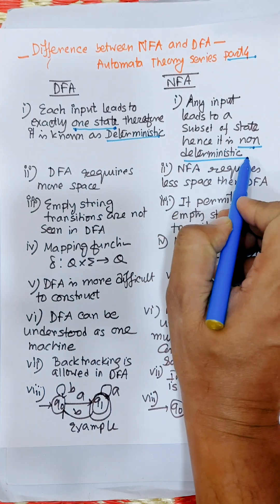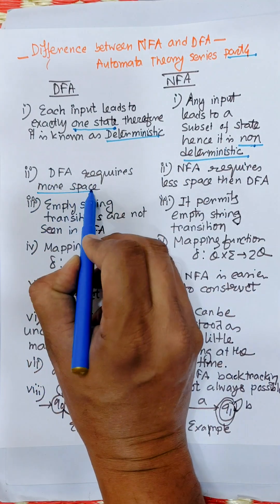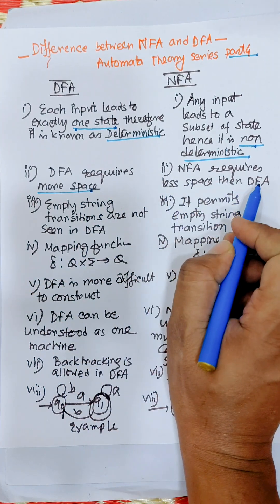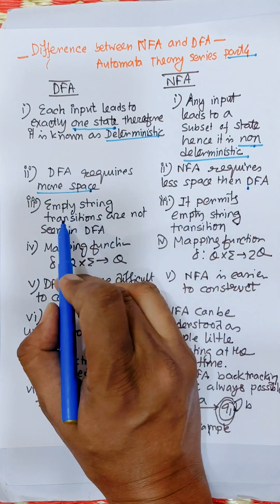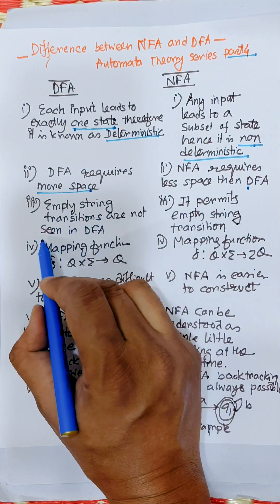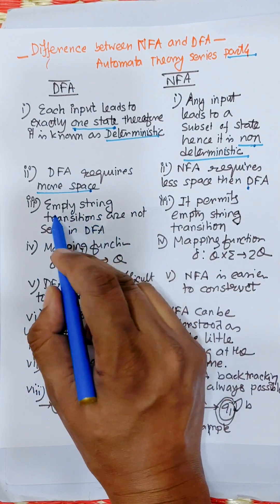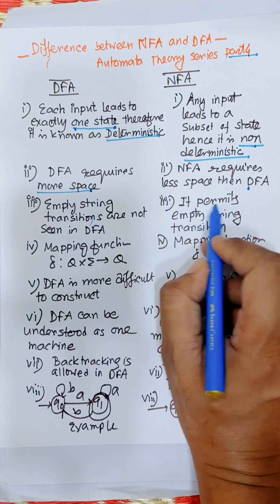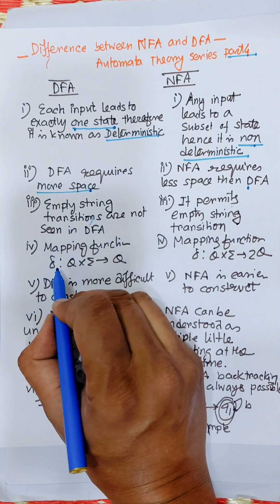Second difference: DFA requires more space, but NFA requires less space than DFA. Empty string transitions are not seen in DFA — empty string transition is not possible in DFA. NFA permits empty string transitions.